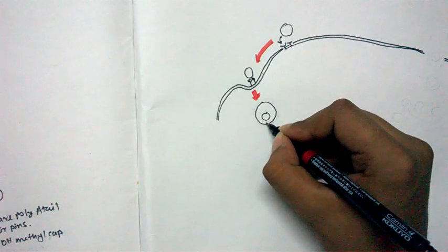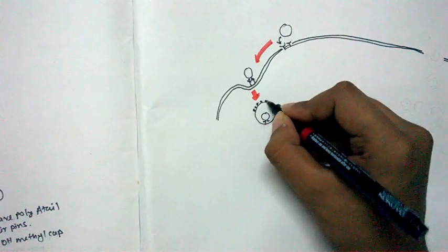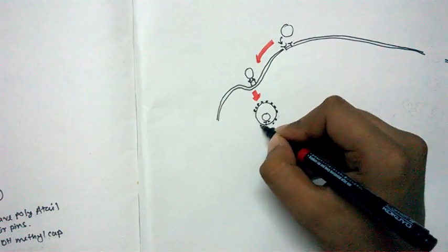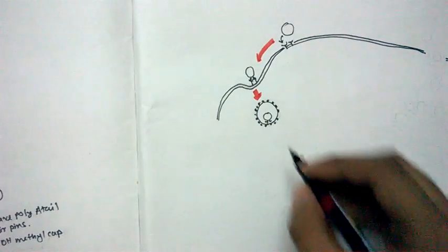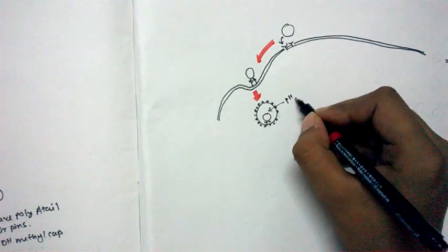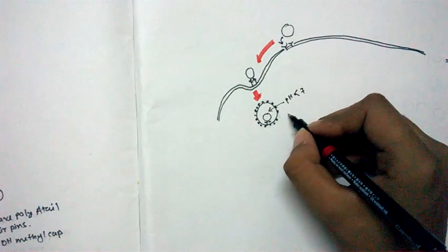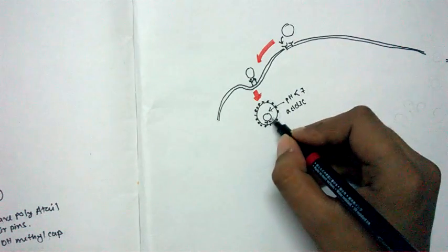After attaching to this particular cell surface receptor, clathrin-mediated endocytosis will take place. Here is the clathrin coat all around the endocytosed vesicle.